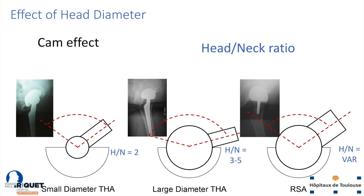The first way is avoiding the cam effect. We have three pictures showing how we can avoid this cam effect by increasing the head size. But more importantly, the head size might depend on the head-neck ratio. So if you keep a big head but still have a very large neck, there might be a risk of early cam impingement.